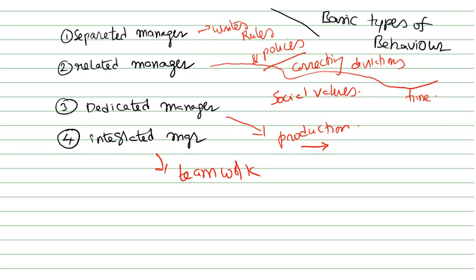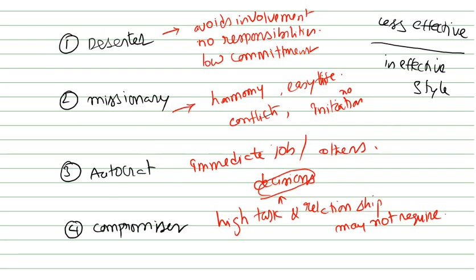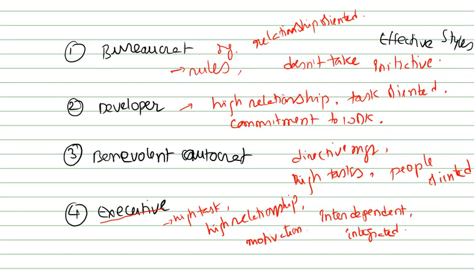Next, less effective type of behavior: deserter, least bothered, missionary - they won't do their responsible activities to the extent required, autocrat, compromiser. The next, highly effective, means they show some mark in the organization.